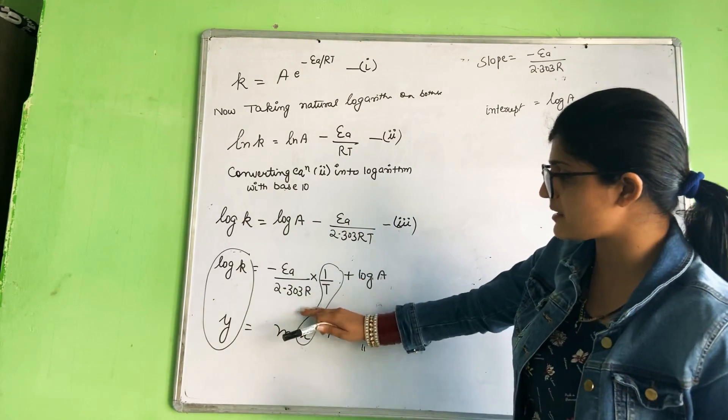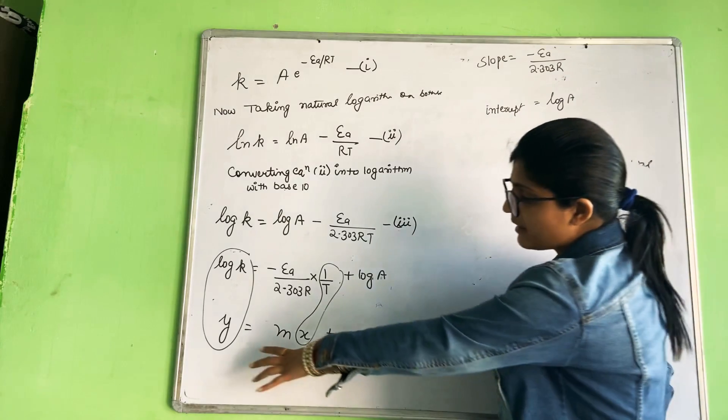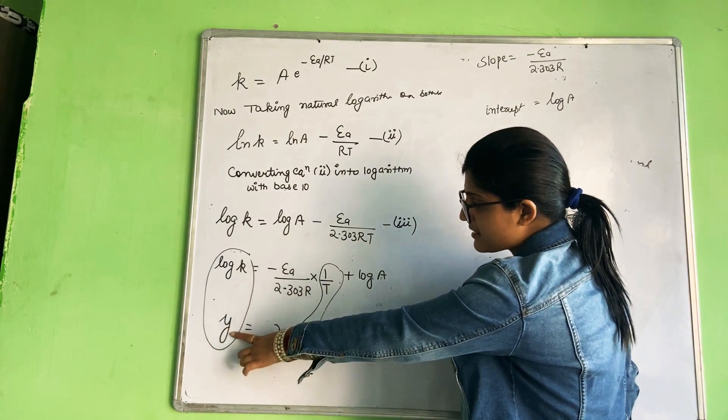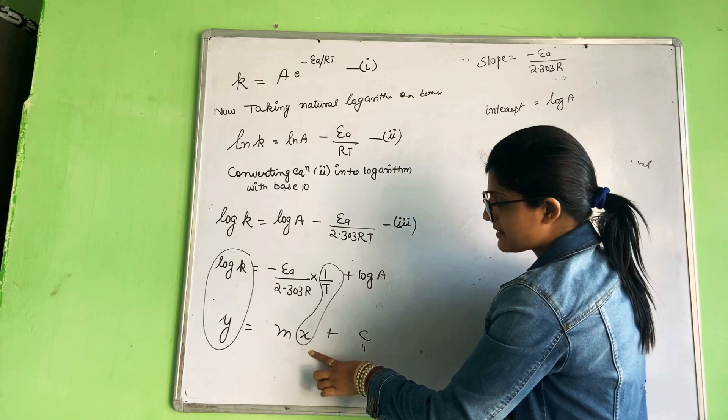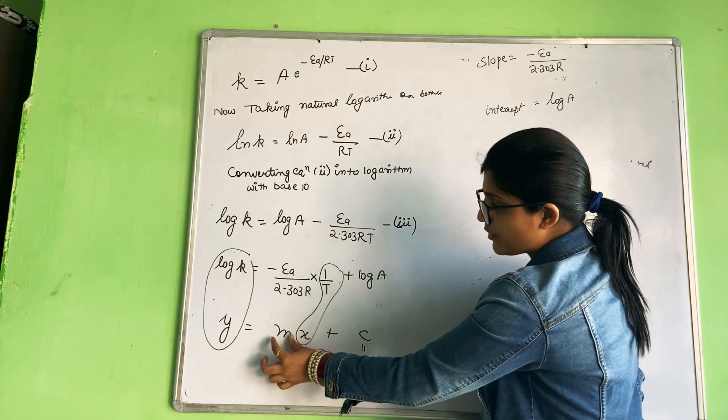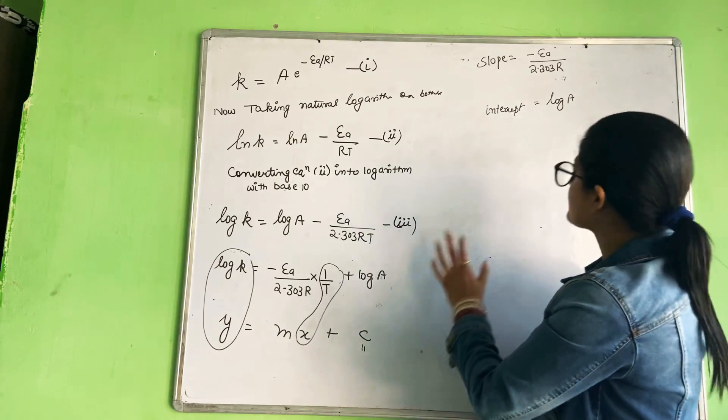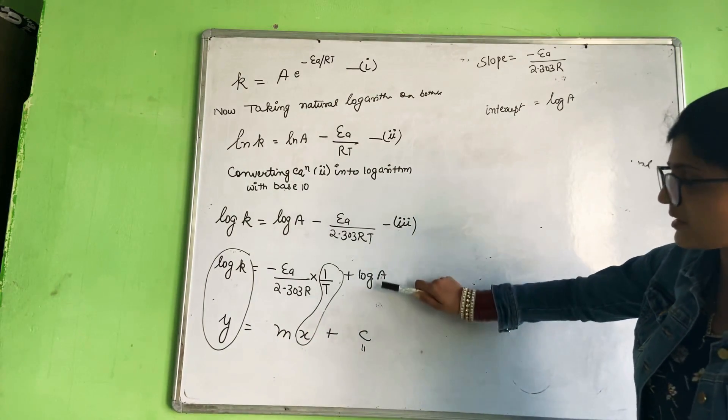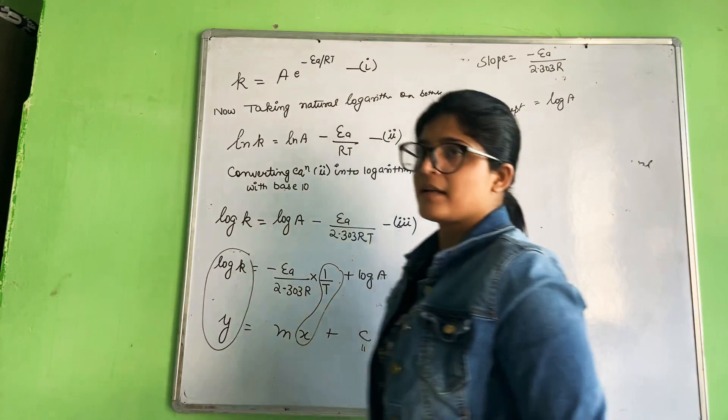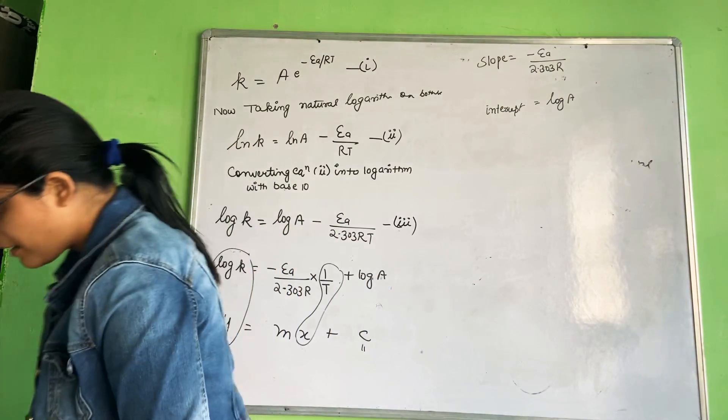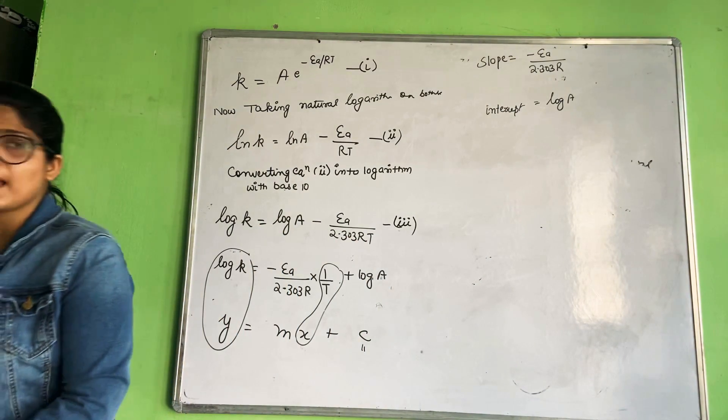Now this equation, if we compare with the straight line equation: log k is y-axis, 1 upon T is x-axis, slope m has value minus Ea upon 2.303R, and intercept c has value log A. Is it clear? This is the case when we have only one temperature.